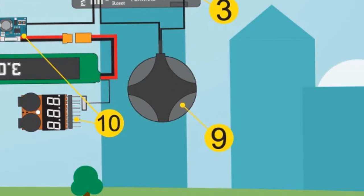GPS provides latitude and longitude. Combined with a magnetometer, barometer, accelerometer, and gyroscope, it is needed for waypoint flying mode.